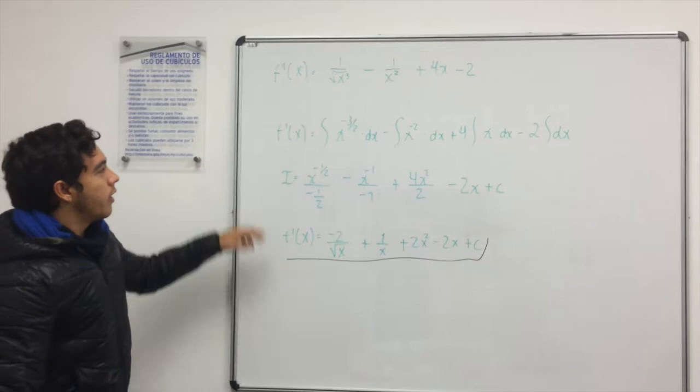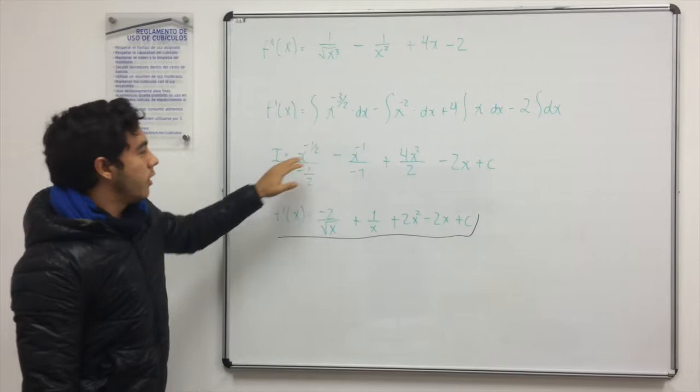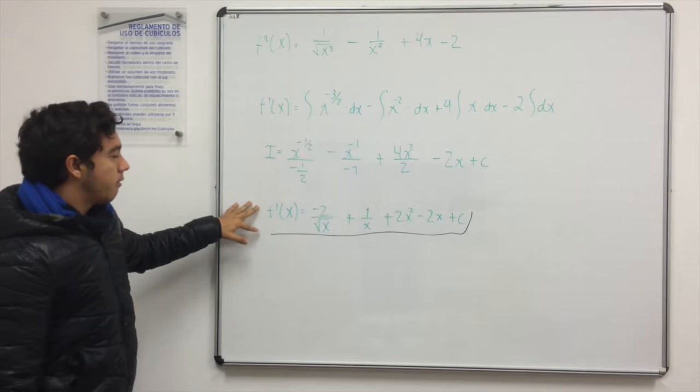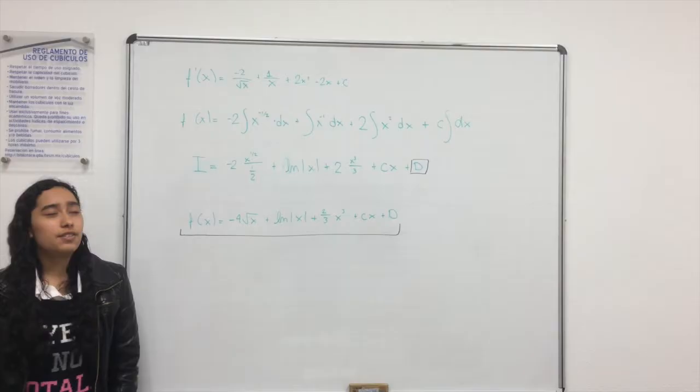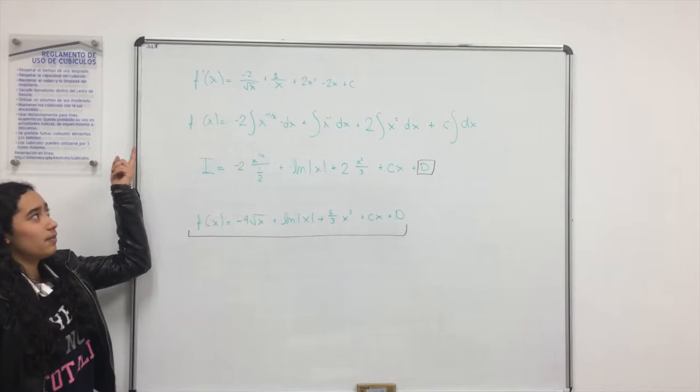And so to find it, we need to separate the terms and multiply by dx in order to integrate. That is our next step. And at the end, we get our first answer, that is the first derivative, that is minus 2 over square root of x plus 1 over x plus 2x squared minus 2x plus c.